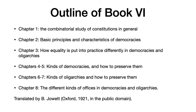An outline of Book 6: Chapter 1 deals with the methodology of the combinatorial study of constitutions in general. In chapter 2, Aristotle discusses basic principles and characteristics of democracies, and in chapter 3, he compares how equality is put into practice in democracies and oligarchies and shows how they put equality into practice differently. Chapters 4 to 5 discuss the kinds of democracies and how to preserve them, while chapters 6 to 7 discuss the kinds of oligarchies and how to preserve them. Finally, chapter 8 is about the different kinds of offices in democracies and oligarchies.